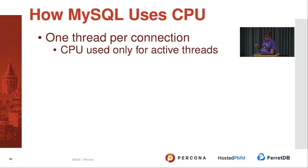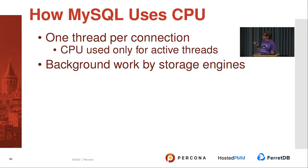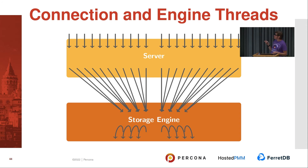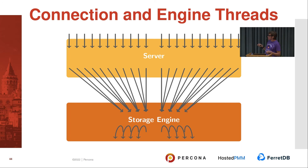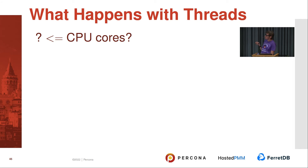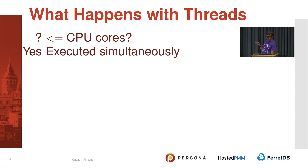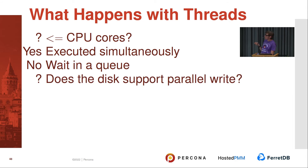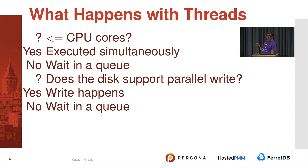CPU: MySQL uses one thread per connection, so CPU is only used for active threads — if a thread is idle, the CPU is idle. It's also used for background work by the storage engine. MySQL can handle thousands of connections — no issue there. With an eight-core machine, the storage engine uses only eight CPUs, and other threads queue. If the number of threads is less than or equal to the number of cores, they execute; otherwise they wait in the queue. Similarly, if the disk doesn't support parallel writes, threads wait.